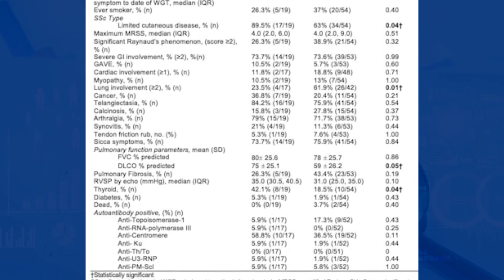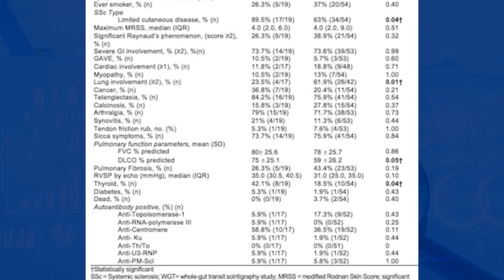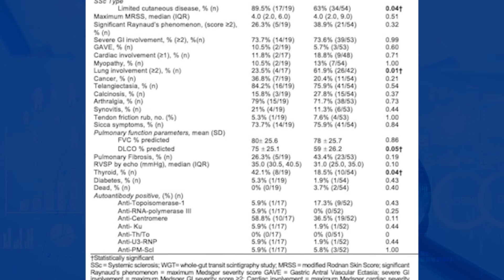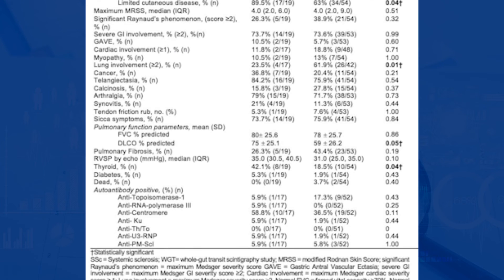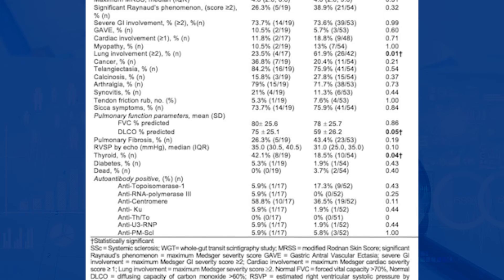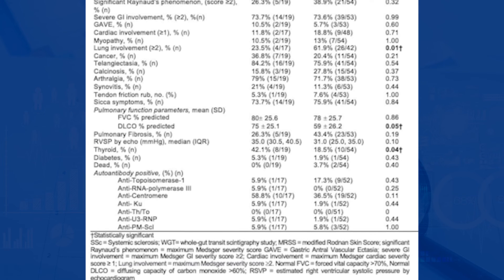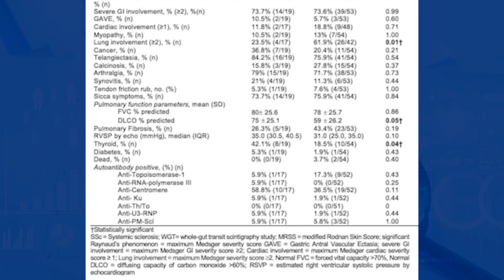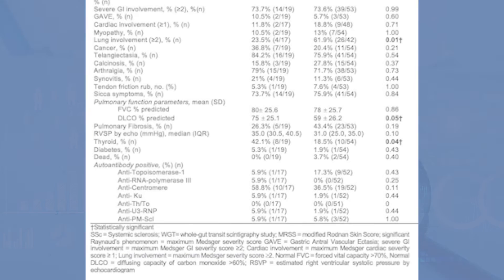Importantly, higher levels of antivinculin antibodies were also associated with delayed gastric emptying on the whole-gut transit study in the univariate analysis, and this association remained significant even after adjusting for age and sex.